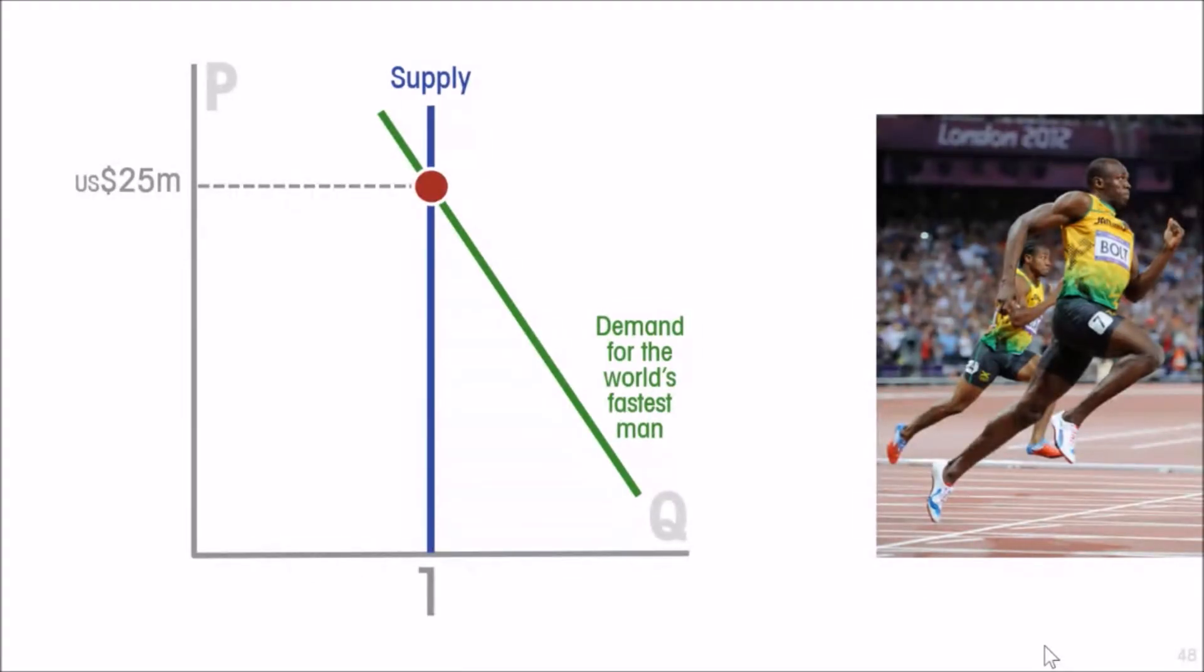Johan Blake, at the time the second fastest man in the world—well, there's only one of that too. But the demand for the presence of the second fastest man in the world is somewhat less, and therefore his services clear at a much lower price.